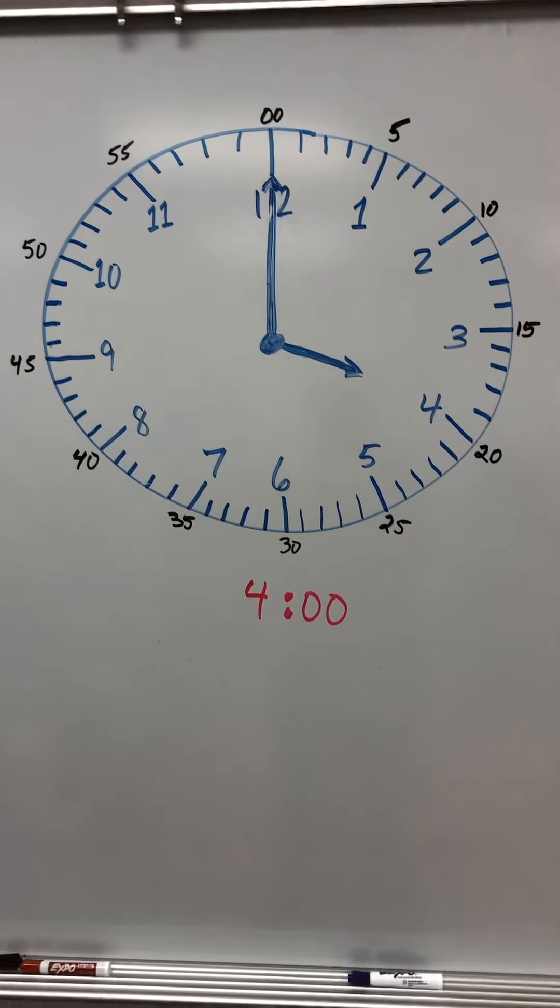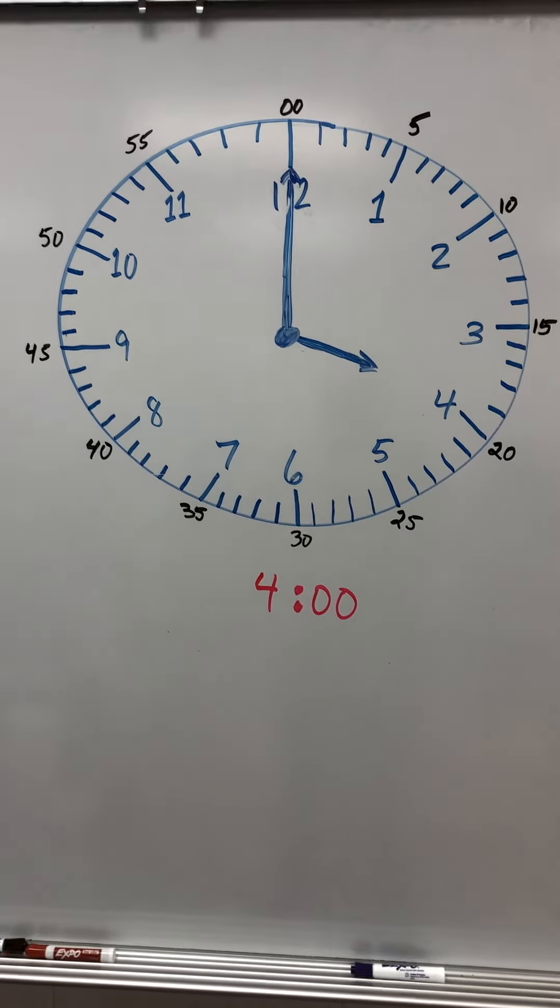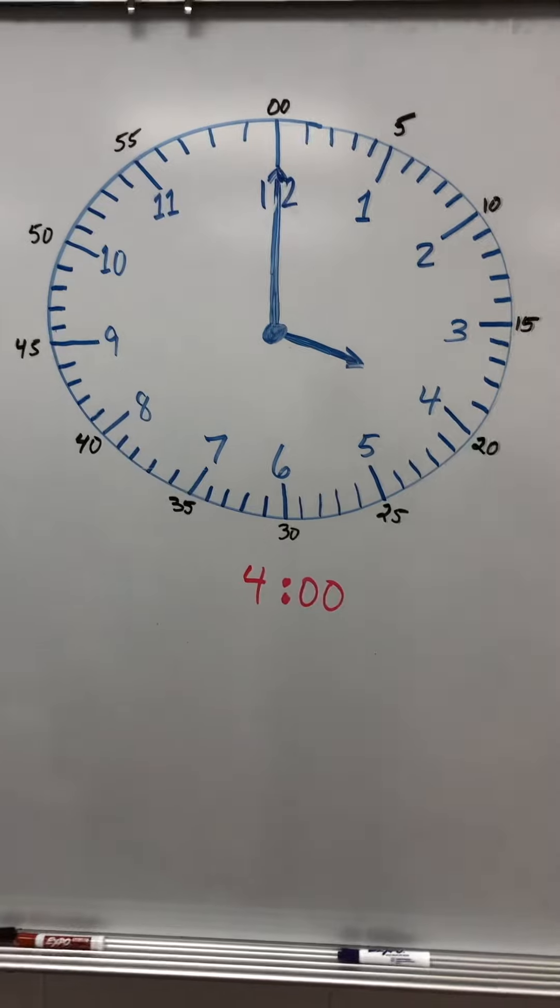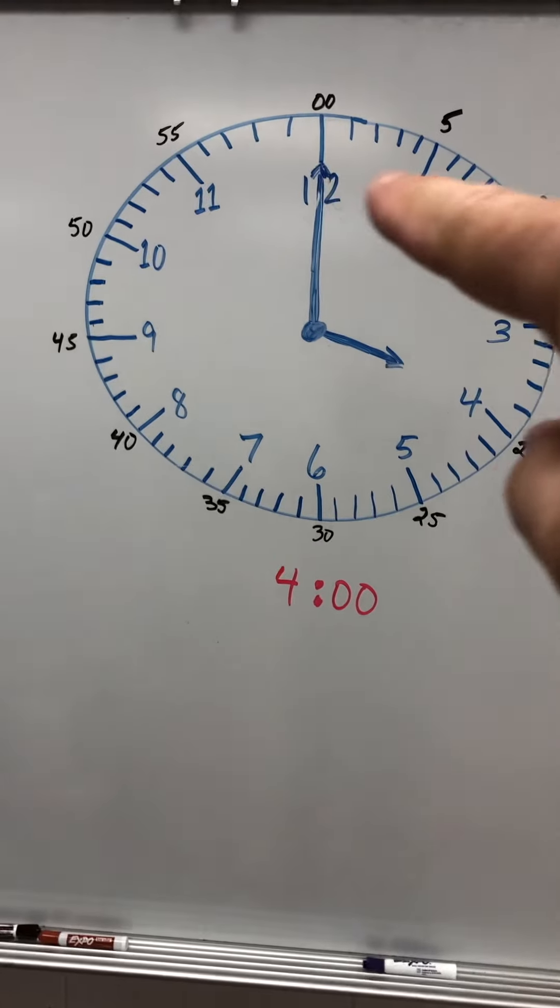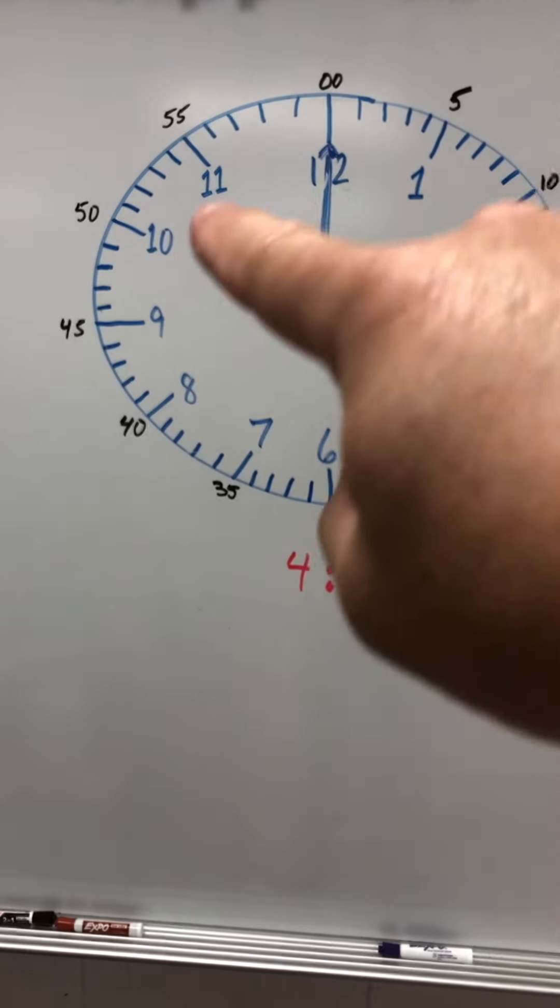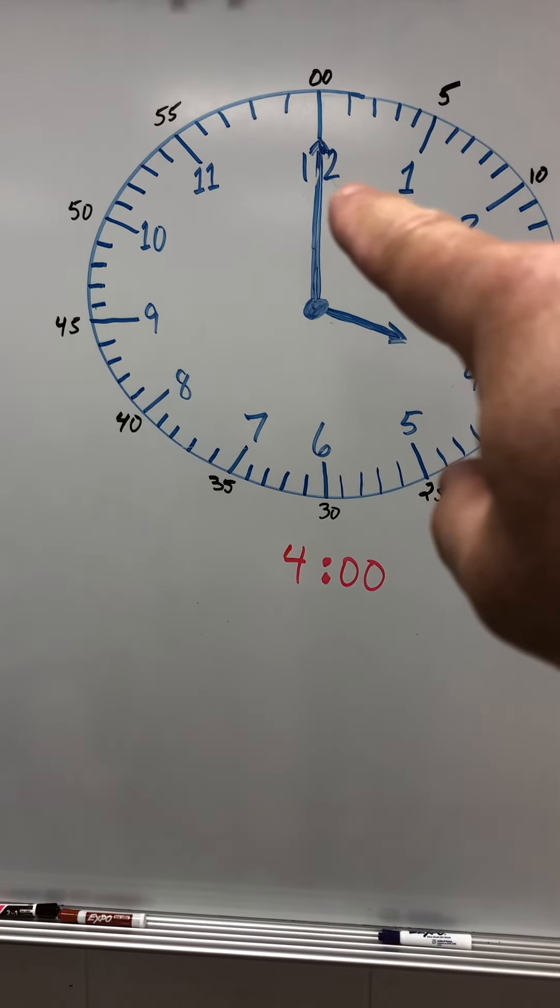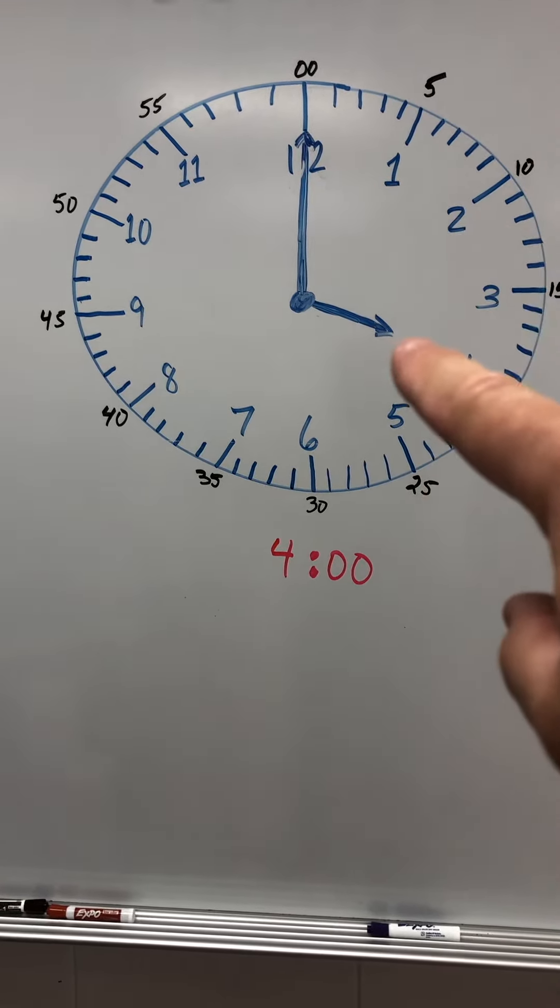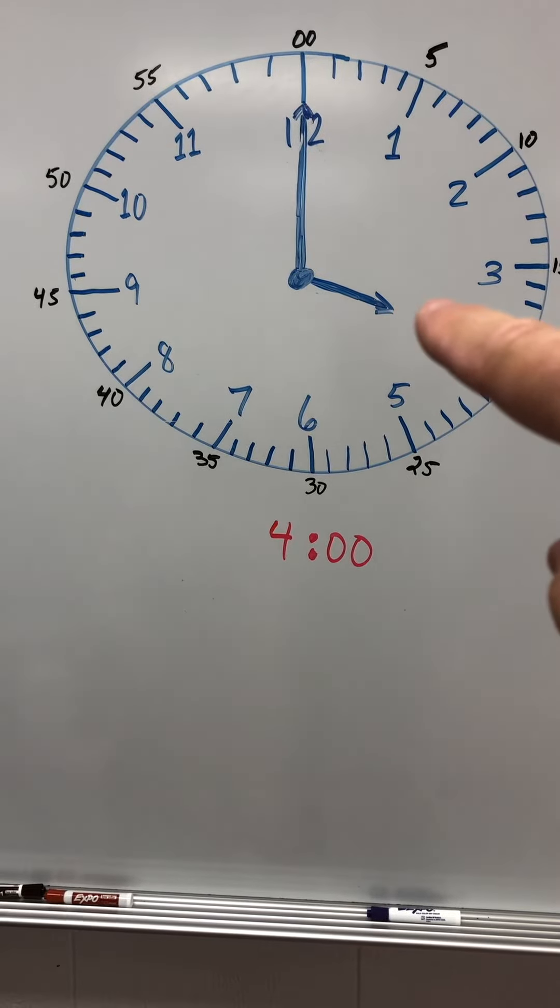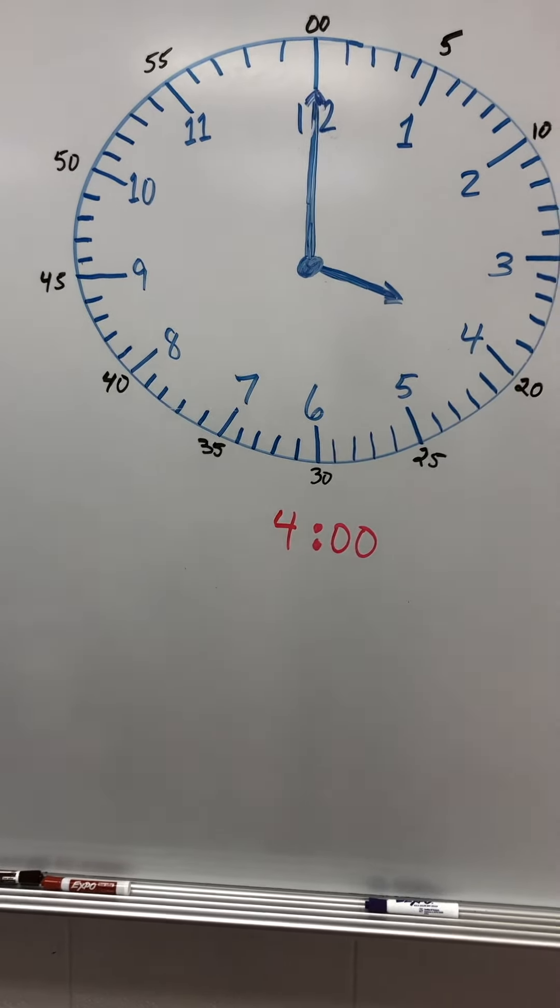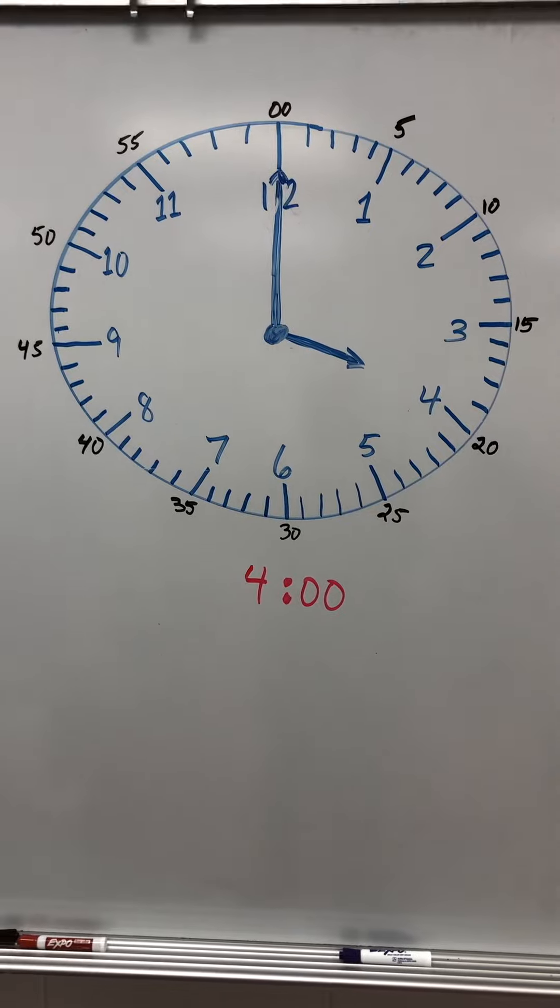So this here is four o'clock. The minute hand will travel one time all the way around. As it travels one time all the way around, this hour hand will only go from the four to the five in one hour, 60 minutes.